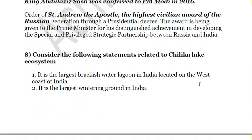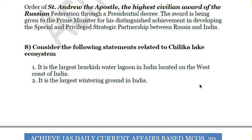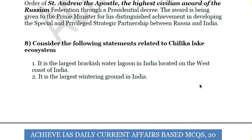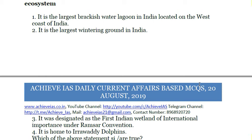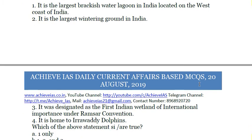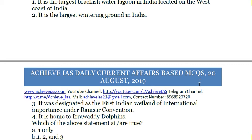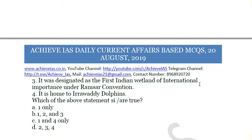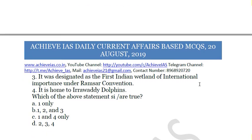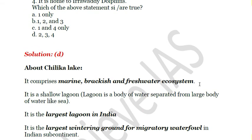The eighth question: consider the following statements related to the Chilika Lake ecosystem. First, it is the largest brackish water lagoon in India, located on the west coast. Second, it is the largest wintering ground in India. Third, it was designated as the first Indian wetland of international importance under the Ramsar Convention. Fourth, it is home to Irrawaddy dolphins. The first statement is incorrect — though Chilika is the largest brackish water lagoon, it is located on the east coast of India, not the west coast. This is a minute detail to keep in mind for exams.